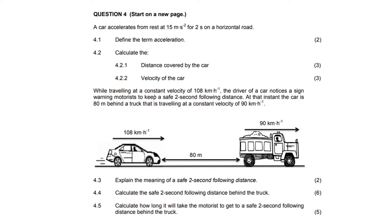Second part of the question: while traveling at a constant velocity — constant velocity means acceleration is zero — of 108 kilometers per hour. When you see 'per hour,' keep in mind there will probably be some conversion, because we don't work in hours. The driver notices a sign warning motorists to keep a safe two-second following distance. At that instant, the car is 80 meters behind a truck also traveling at a constant velocity of 90 kilometers per hour.